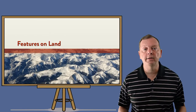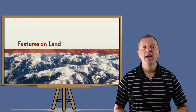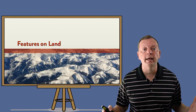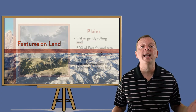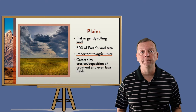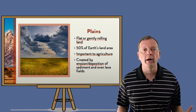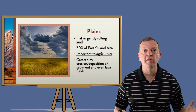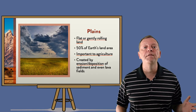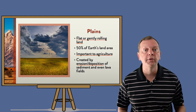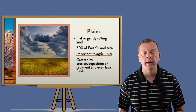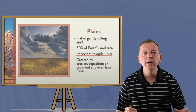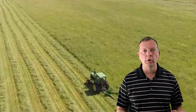Let's begin by looking at the basic types of landforms. When we talk about basic, there cannot be any landform more basic than the plain. A plain is simply a flat area, and while 70% of the earth is covered by oceans, the plains account for 50% of the earth's land area. Now plains are important because they are often major areas for agriculture.